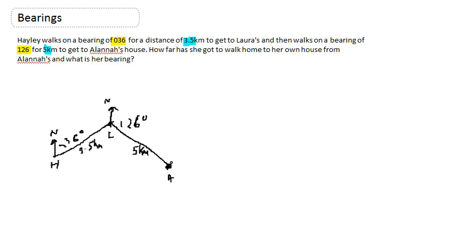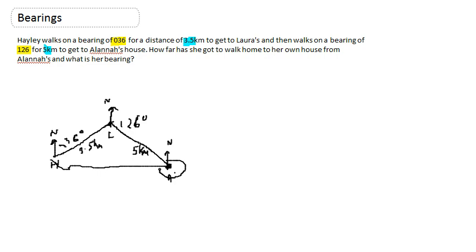I'm not ready to draw the rest of the picture yet because it doesn't matter. However, there's my north line from Alana, because the question asks how far she has to walk home to her own house from Alana's, and what is the bearing. So my first thing to work out is this distance, and the second is the bearing from north all the way around.